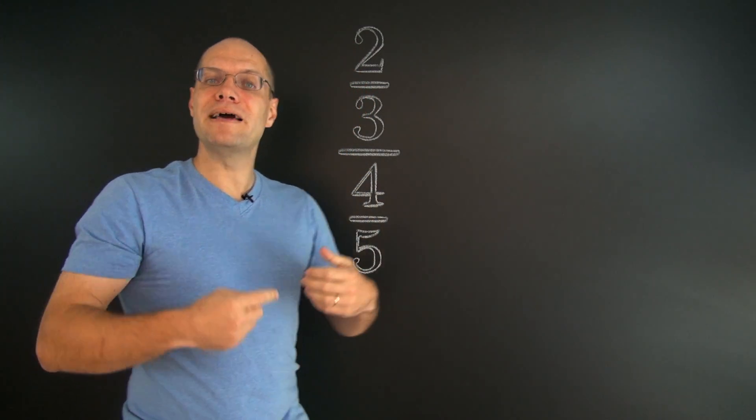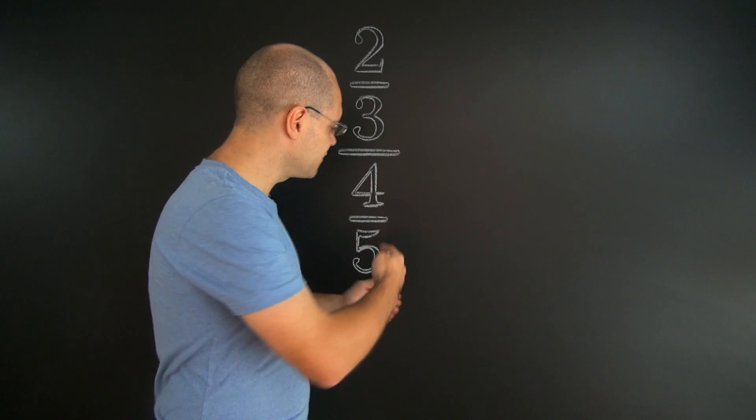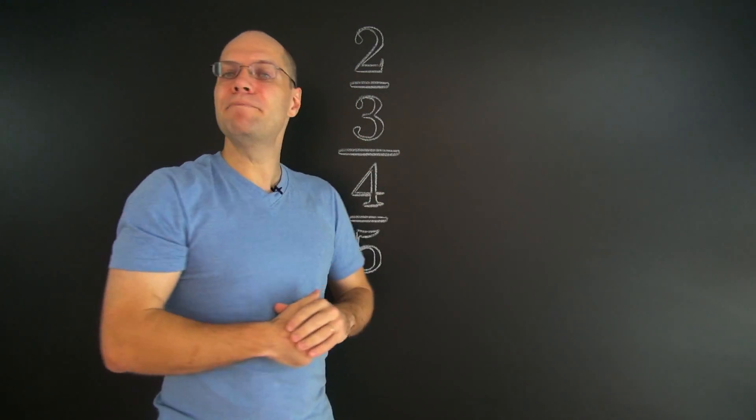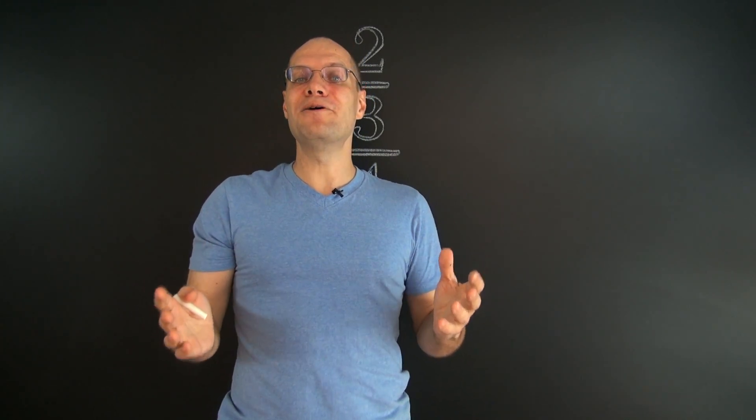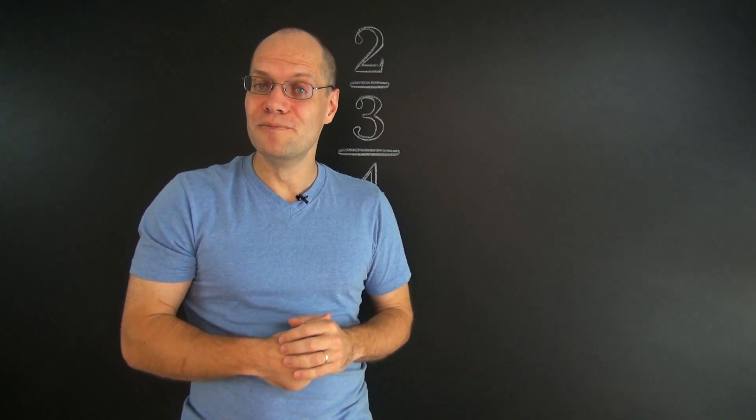Because we know that when we're dividing by a fraction, we must multiply by its reciprocal. We must flip it and multiply by it. Why does that work? Well, that's a different story for a different video. For now, let's just use it as a rule.